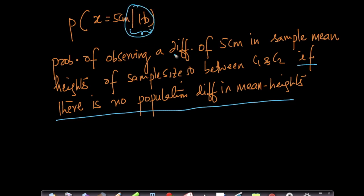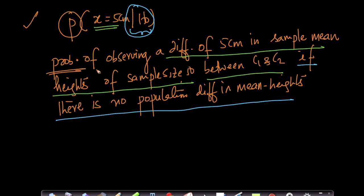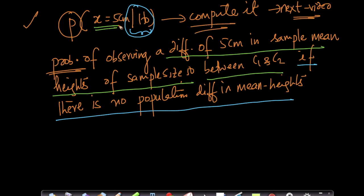It's always important to read your equations as English statements, otherwise you lose track of what you're computing. X = 5 centimeters means a difference of 5 centimeters in sample mean heights of sample size 50 between C1 and C2. The condition on H0 means there is no population difference in mean heights. In the coin toss case it was easy to compute — for this it's slightly trickier, as we'll see in the next video.